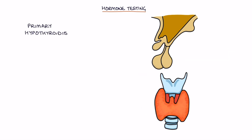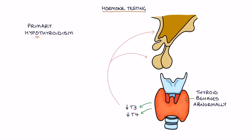Primary hypothyroidism is where the thyroid behaves abnormally and produces inadequate thyroid hormones. Because there's abnormally low thyroid hormones, there is an absence of negative feedback, which means there's an increased production of TSH by the pituitary. TSH is raised and T3 and T4 are low in primary hypothyroidism.